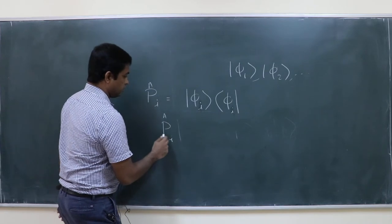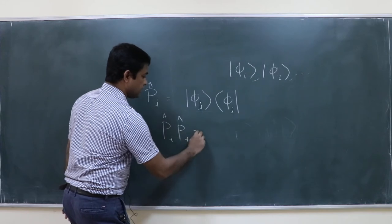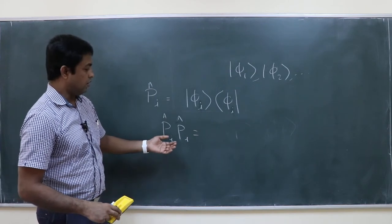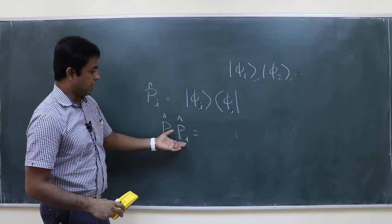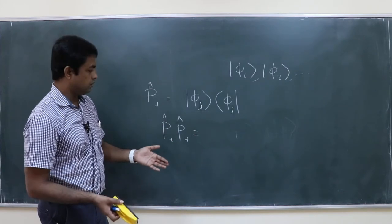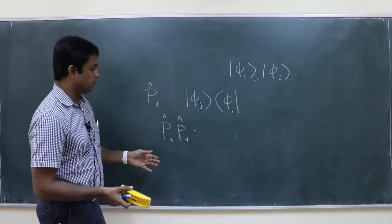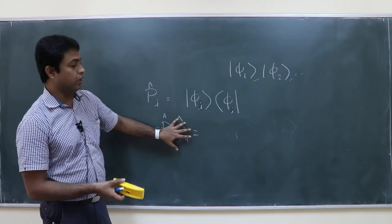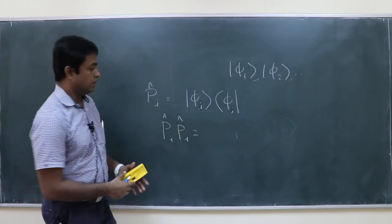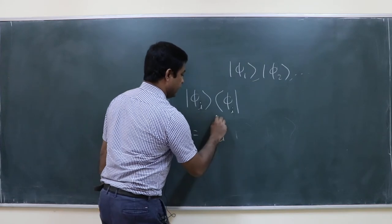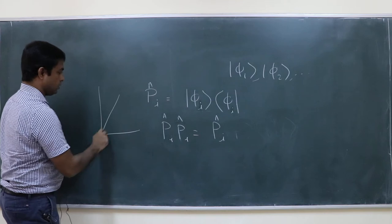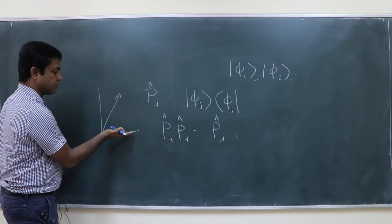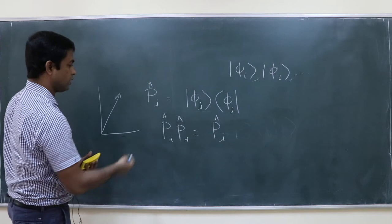What is Pi times Pi? Conceptually, if I take a projection along some normalized vector, and then I do the same projection again, I expect to get Pi again — without doing a mathematical calculation. Once you have projected a vector along this direction, doing it again is not going to change anything. So Pi squared equals Pi.